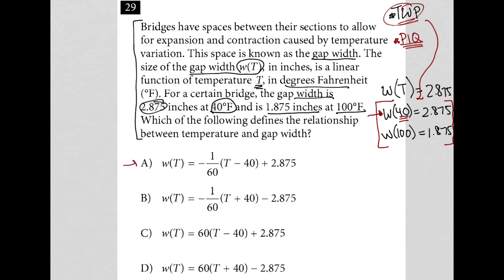For choice A, I replace T with 40. The answer I expect to get is 2.875. Let's check: 40 minus 40 is zero; negative 1/60 times zero is still zero; and zero plus 2.875 is exactly 2.875. So I like answer choice A, but I'll try the others as well.